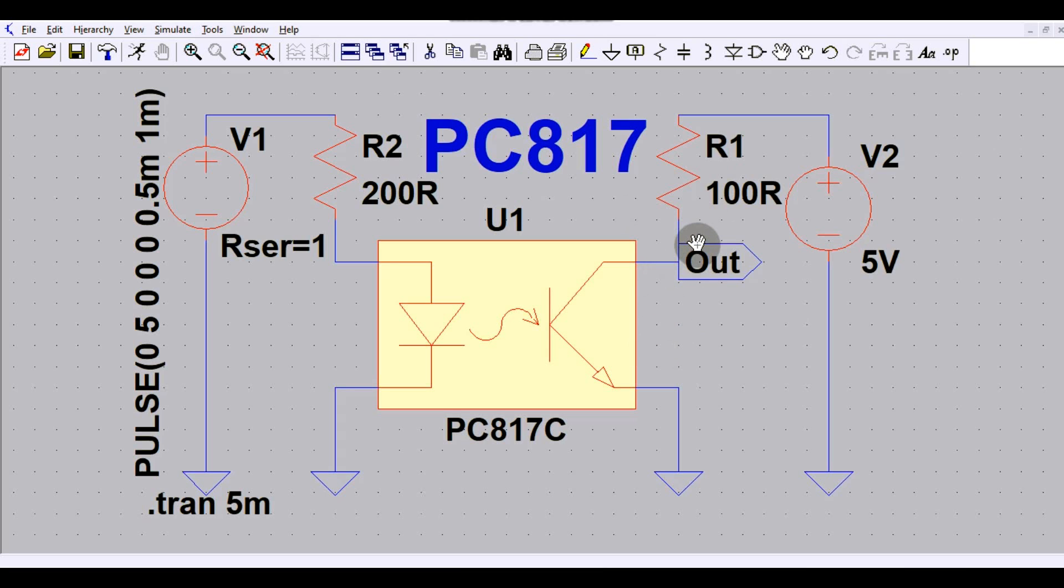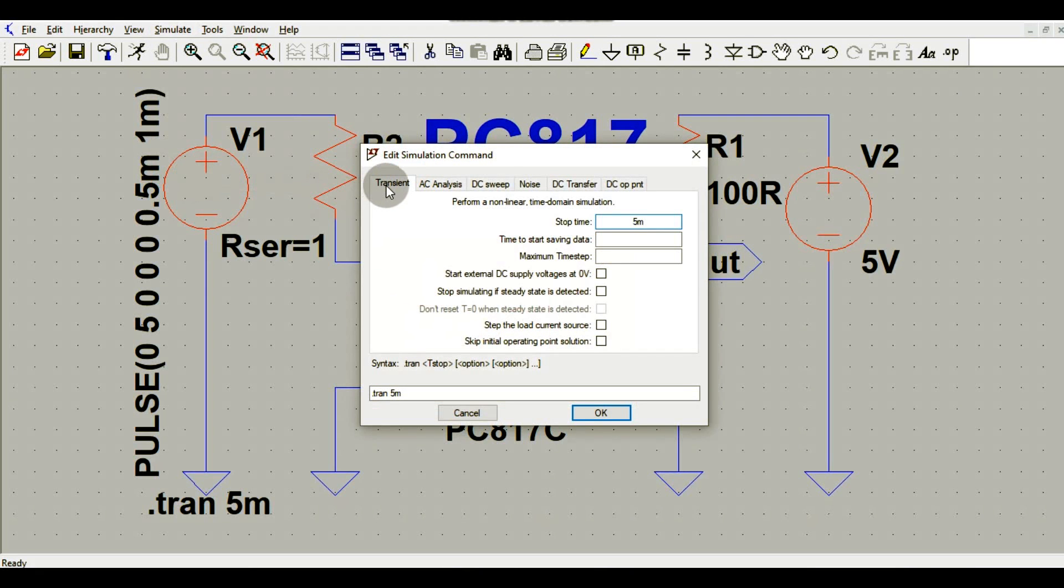This is just a simple example to show you the simulations. Now I will run the simulation and let us see what the exact behavior of this circuit is. You have to go here simulate, then edit simulation command, then you have to go transient.